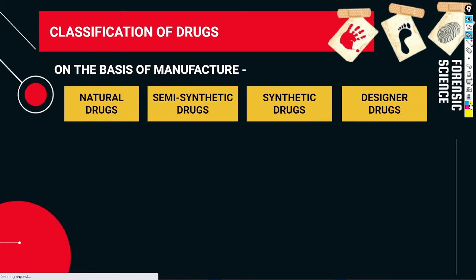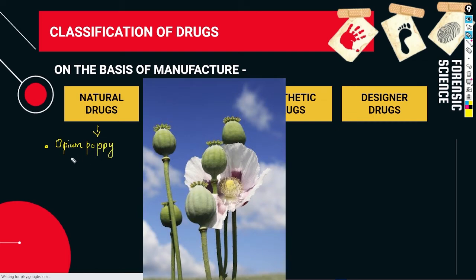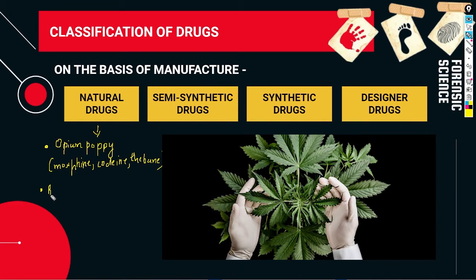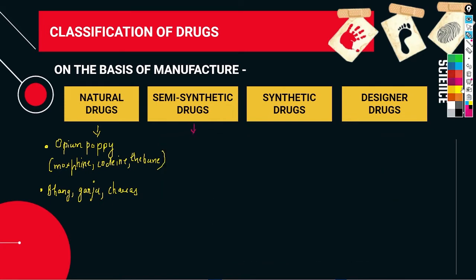On the basis of manufacture, first comes natural drugs. Natural drugs come from the opium poppy plant — you can see this image. From opium poppy we get morphine, codeine, and thebaine. Then bhang, charas, ganja — you can get cannabis. All of these are natural drugs obtained from plants.